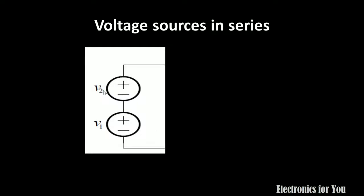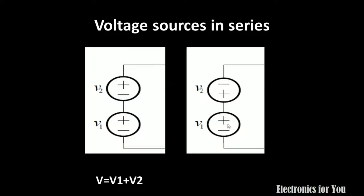What if voltage sources are connected in series? If V1 and V2 are connected in series with the positive terminal of V1 connected to the negative of V2, we can apply KVL, and the resultant voltage will be V1 plus V2. But if the positive of V1 is connected to the positive of V2, the resultant voltage V equals V1 minus V2. For example, if V1 is 10 volts and V2 is 5 volts, the resultant will be 5 volts.